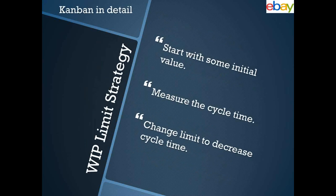The next strategy is the work in progress limit. How do you limit it? Start with some initial hypothetical value — a good start is the number of engineers on your team. If you have three engineers, start with three as your initial value. Then measure the cycle time: how long does it take for all three tasks to release? Then adjust your work in progress limit to see how you can improve your cycle time.